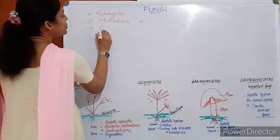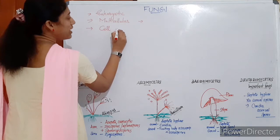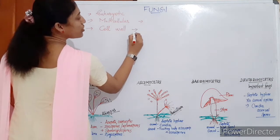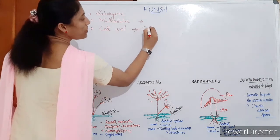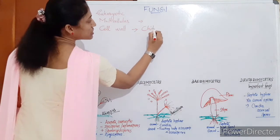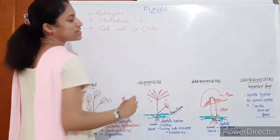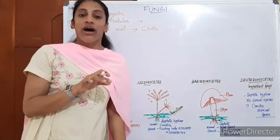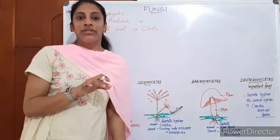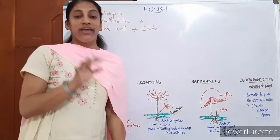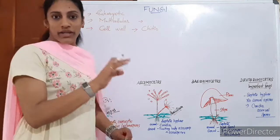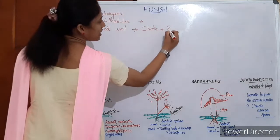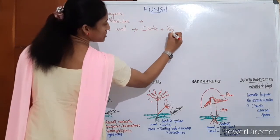A very important feature while they are in a separate kingdom: their cell wall is not made up of cellulose. Instead, it is made up of chitin. The cell wall of fungi is chitinous — made up of chitin, which is a polysaccharide, like cellulose.